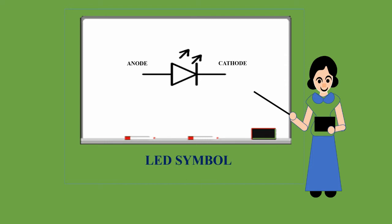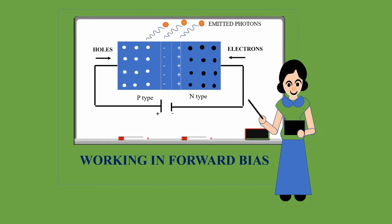The symbol of an LED is similar to a PN junction diode and contains arrows pointing away from the diode, indicating the emission of light. Like a normal PN junction, it operates in forward bias. When voltage is applied to the PN junction diode, free electrons from the N-side and holes from the P-side try to cross the junction.